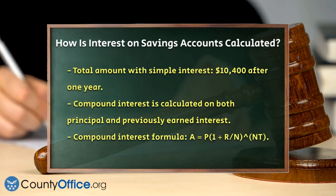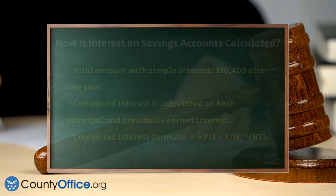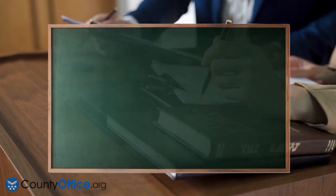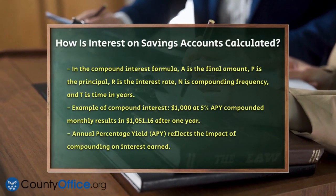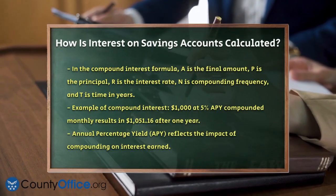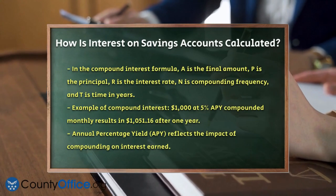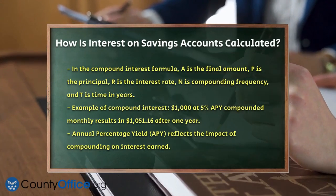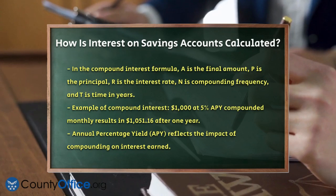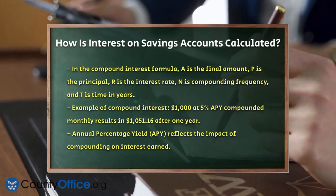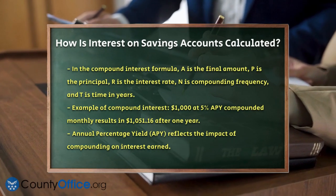For instance, if you have $1,000 in a savings account with a 5% APY compounded monthly, you would calculate the interest using the formula. First, convert the APY to a decimal — 5% becomes 0.05 — then divide by 12, the number of months in a year, to get the monthly rate. This gives you $1,051.16 at the end of the year, which includes both the principal and the interest earned.